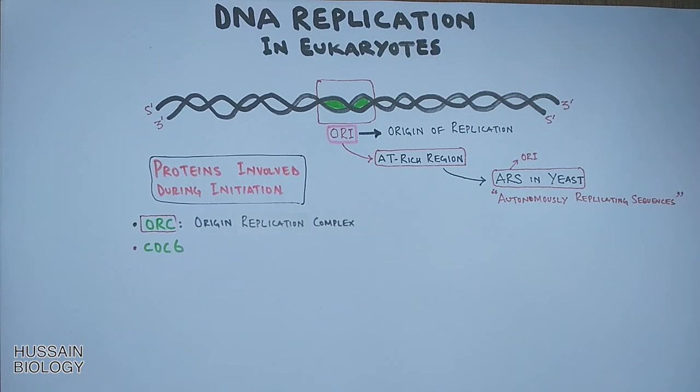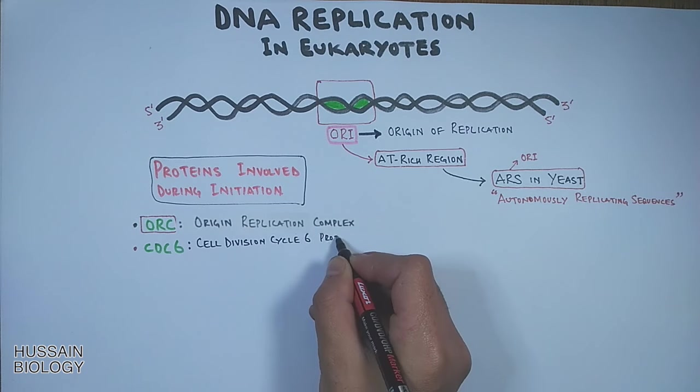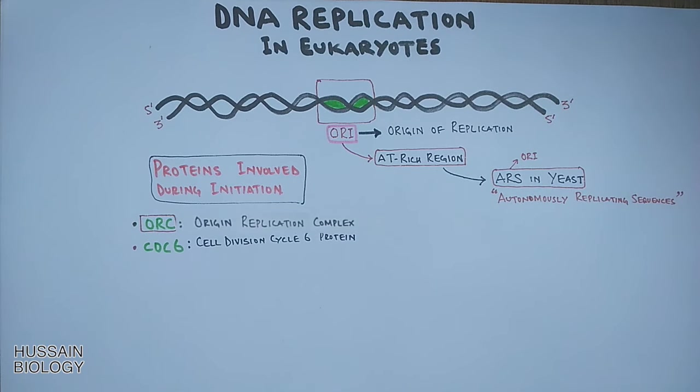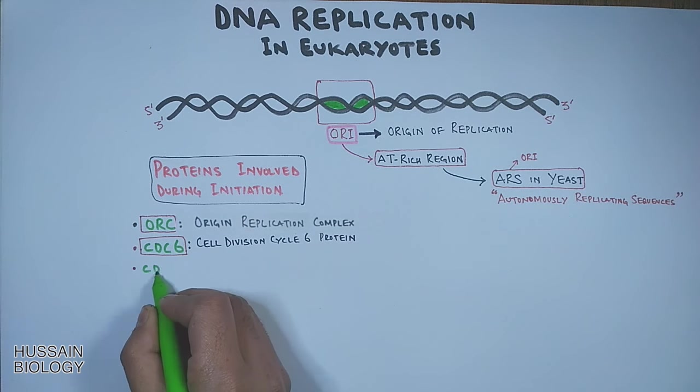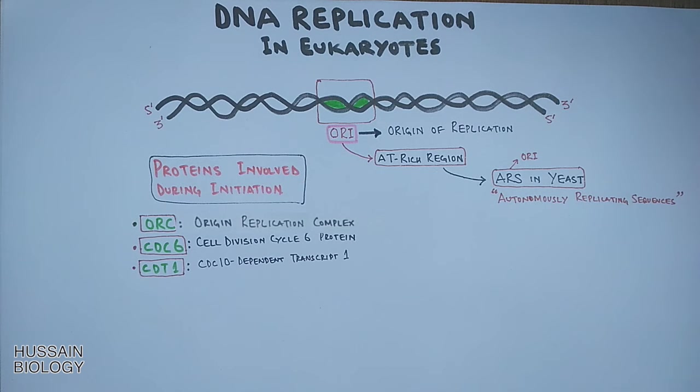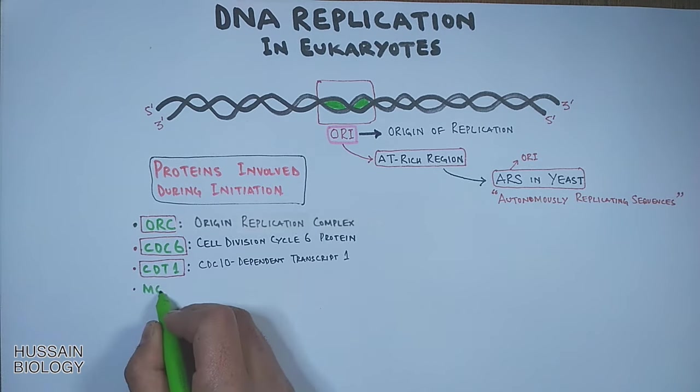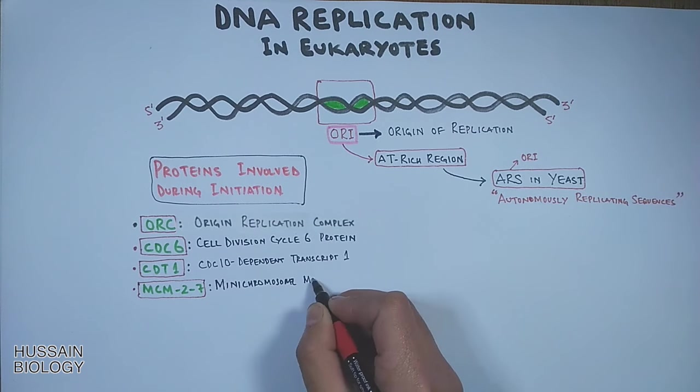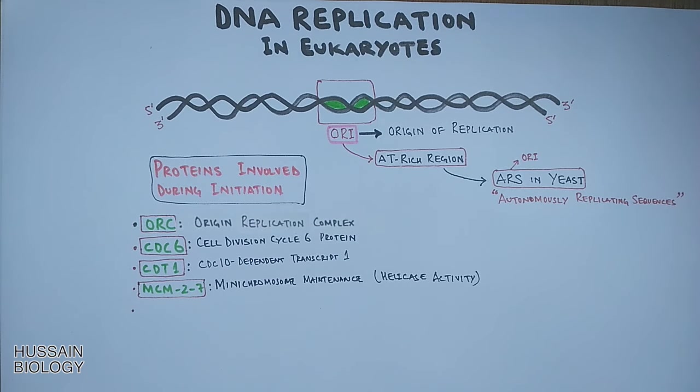The second protein for initiation is cdc6 protein, cell division cycle 6 protein, required for helicase loading. Then we have cdt1 protein, cdc10 dependent transcript, also used for mcm loading or helicase loading. cdt1 interacts with mcm and induces topological association of mcm ring with the DNA. Then we have mcm2 to 7, that's mini chromosome maintenance, a multi-protein unit of 6 mcm proteins which shows helicase activity.